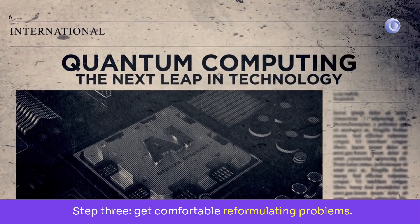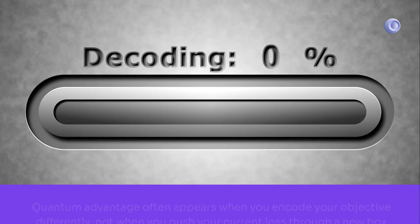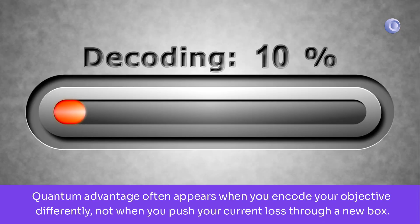Step 3. Get comfortable reformulating problems. Quantum advantage often appears when you encode your objective differently, not when you push your current loss through a new box.